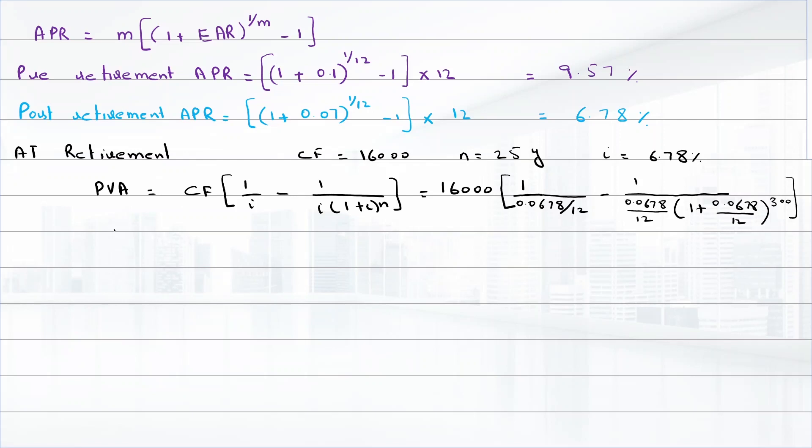So present value of the inheritance amount - that is the present value of the cash needed. Still we have to find the present value of the inheritance.